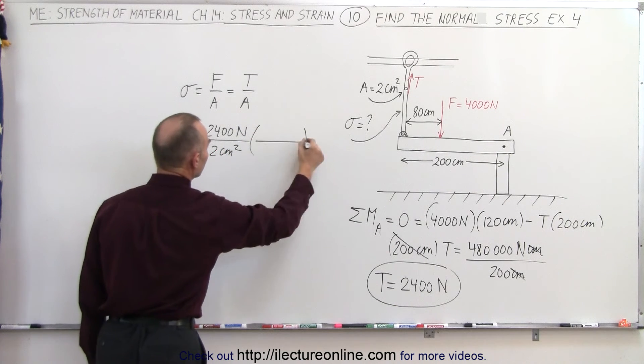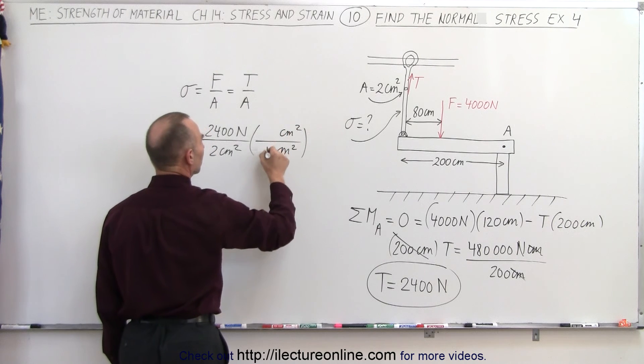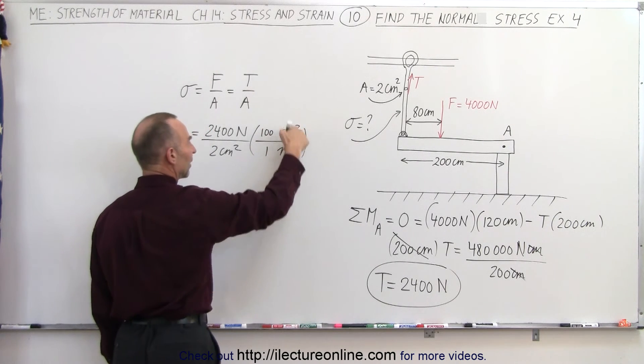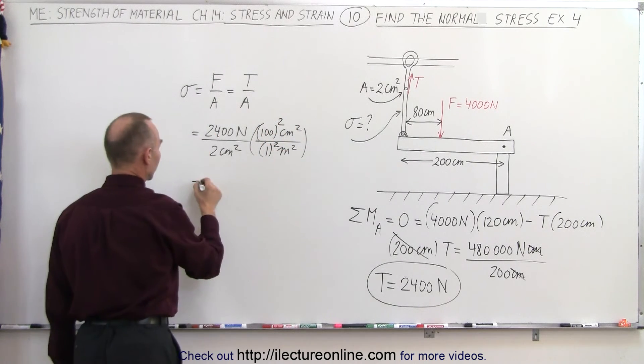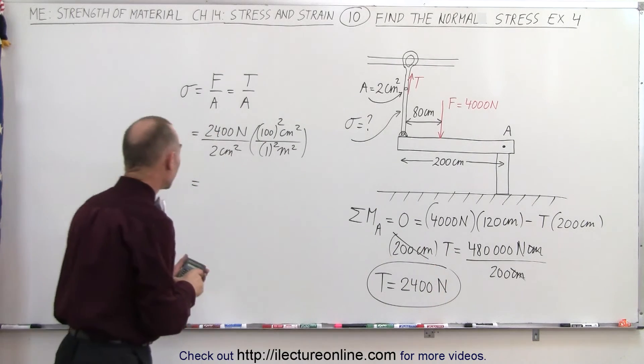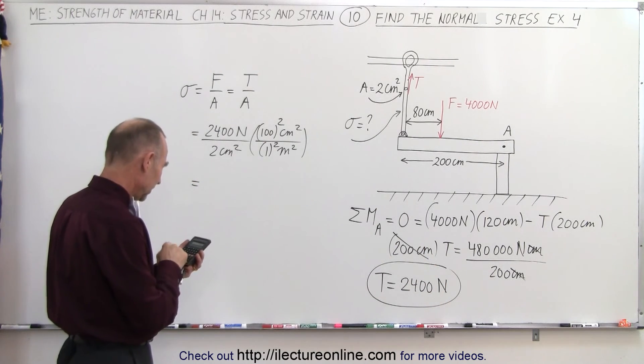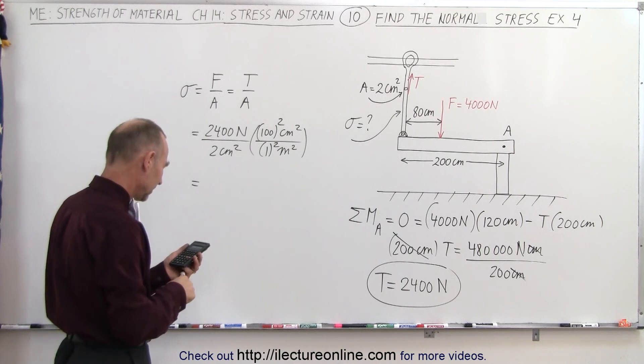Of course, we need to convert that to meters squared in this case, so we have centimeters squared, one meter is 100 centimeters, but since we have this squared, we have to also square the numbers here. So this will be equal to, I think it's 12 million, so we have 10,000 times 2,400 divided by 2.